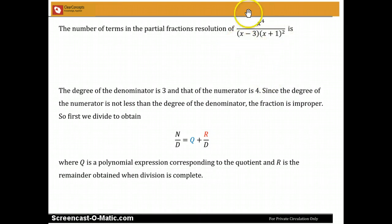So we must first divide and get a quotient plus a remainder by denominator kind of expression, where Q, the quotient, is a polynomial expression and R also is a polynomial expression corresponding to the remainder.